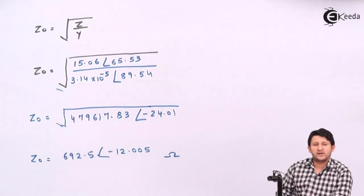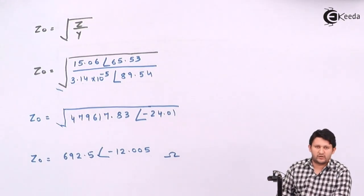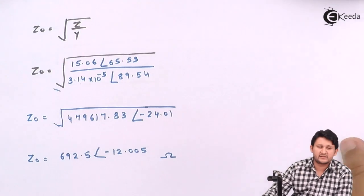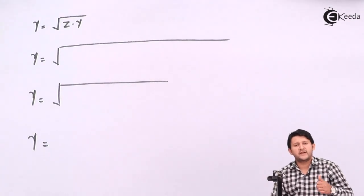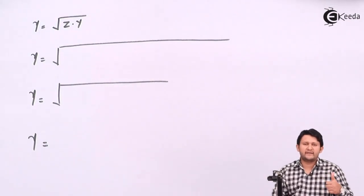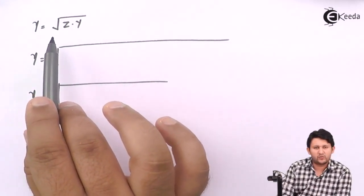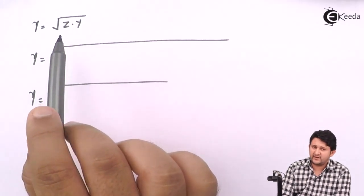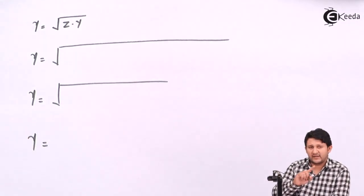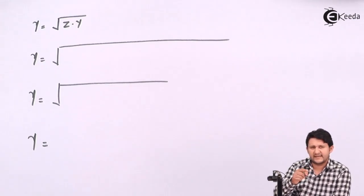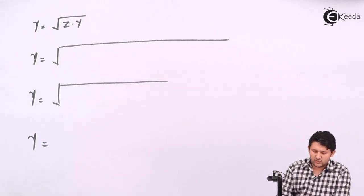Now let's find the propagation constant γ. It also depends on impedance and admittance, but the formula is γ = √(Z × Y) — not Z/Y. For Z0 the formula is Z/Y; for γ the formula is Z × Y. Please don't interchange the formulas.